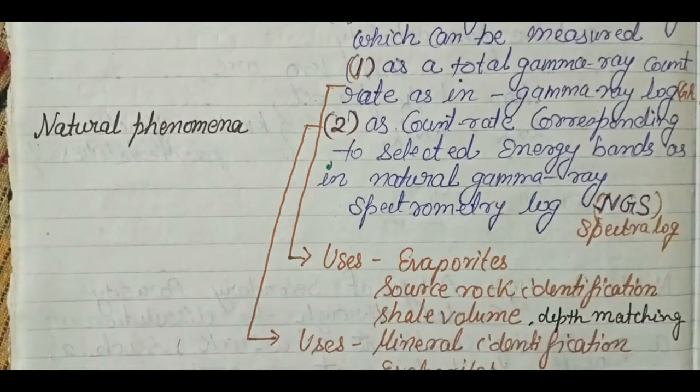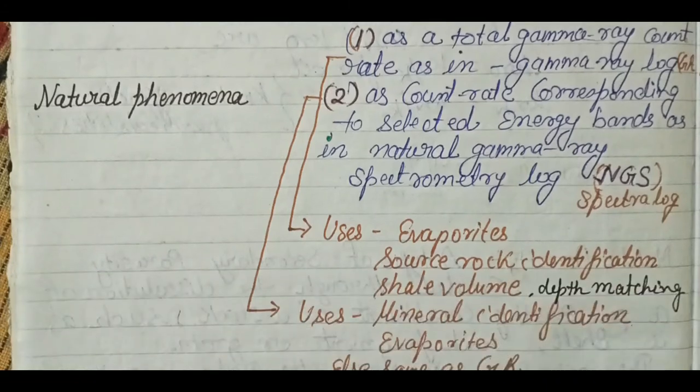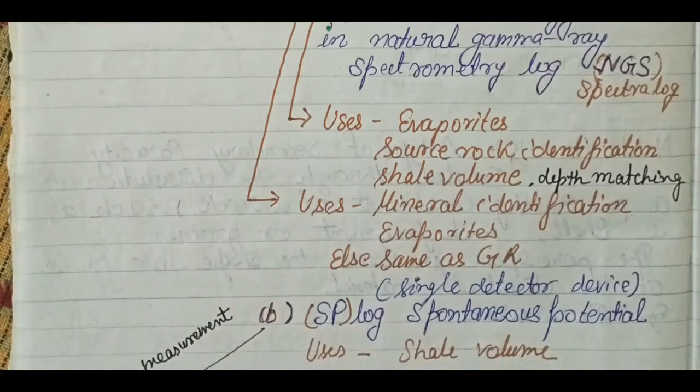The uses of the total gamma ray log are: evaporite identification, shale volume estimation — that is why it is also called the shale log — and depth matching. The spectrometry gamma ray log is used for mineral identification and evaporite identification; other uses are the same as the total gamma ray log.